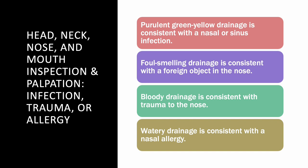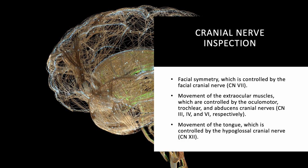When doing head, neck, nose, and mouth inspection, we're looking for infection, trauma, or allergy. You can tell by the drainage: purulent green or yellow drainage indicates a sinus or nasal infection. Foul-smelling drainage usually indicates a foreign object in the nose. Bloody drainage indicates nasal trauma. Watery drainage indicates a nasal allergy. Please understand the difference in presentation of these four types.